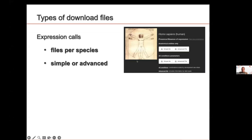There are various ways to retrieve the data and we provide it in different formats. The most basic formats are TSV files — tabulated separated files — which come in different flavors. We provide one file per species, with simple or advanced files. The simple file contains only the calls of expression and the conditions. The advanced file includes p-values per data type, expression scores, and number of samples. The advanced file is larger, so the simple file may be more practical.